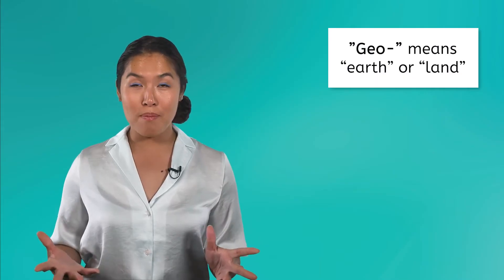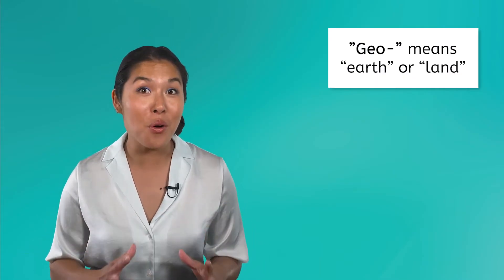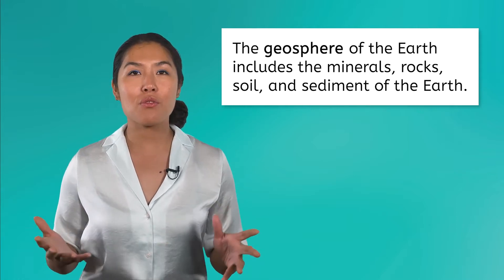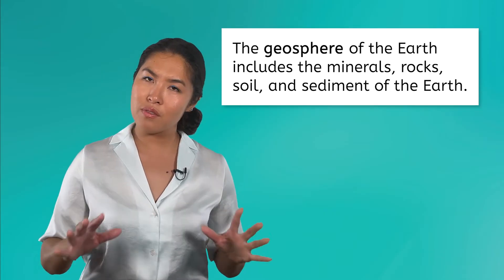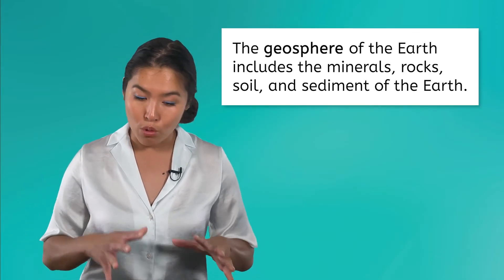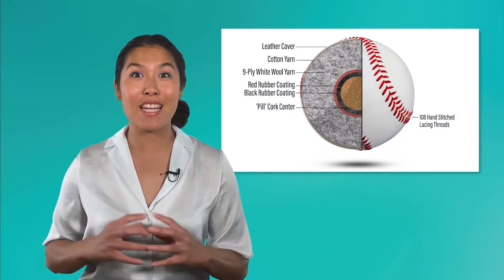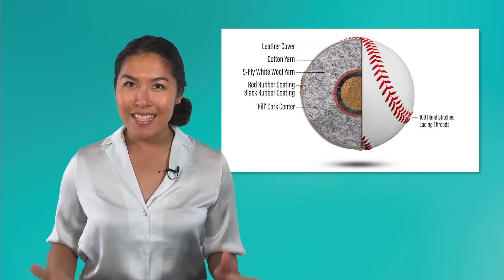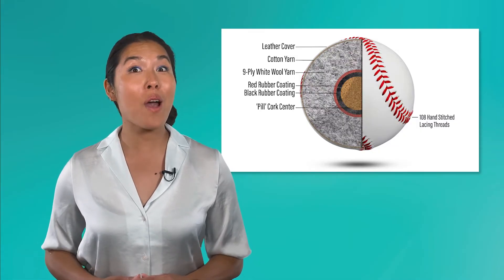The prefix geo means earth, or land. So it makes sense that the geosphere is the area of the earth that incorporates all of the minerals, rocks, soil, and sediment. When you think of rock, soil, and minerals, you probably picture the surface of the earth, the mountains, and maybe the floor of the ocean. However, that is only one percent of the geosphere. In fact, the geosphere incorporates all of the earth down to the inner core. Along with the crust, the geosphere is also made of the mantle and the core. I like to think of the earth like the inside of a baseball, with many concentric layers, which means all of the layers have the same center. Now that we know what the geosphere is, let's take a journey down through each section of the earth all the way to its core.